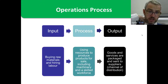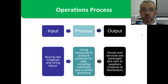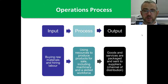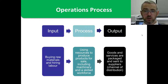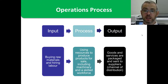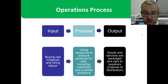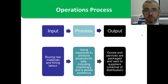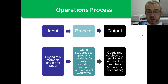So it's the buying of raw materials and hiring the labour as the input. The process is using resources to produce products for sale, including machinery - so you need a skilled workforce. Notice you're starting to interweave a lot here: we're talking about land, labour, capital, enterprise. When we go on to HR we'll look at training and motivation. Then you've got your output where your goods or services are packaged and sent out - bringing in the channel of distribution which we've covered in marketing.